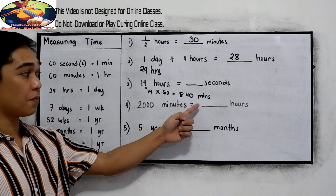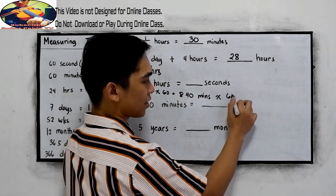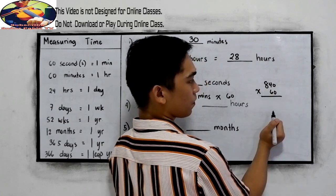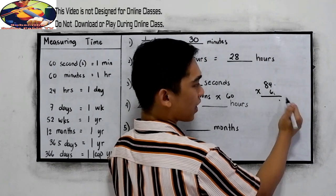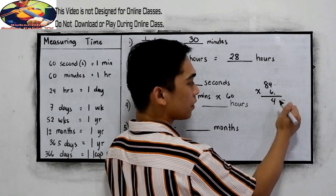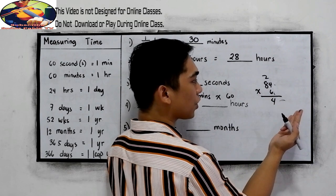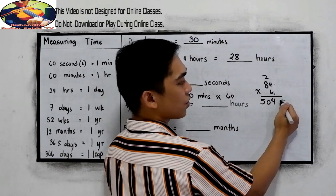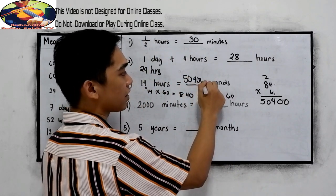So 840 minutes, we need to convert into seconds. So again, multiply it by 60. 840 times 60. So just remove the zero. We have two zeros. Just write two zeros later. 6 times 4, 24. Then we have two zeros. So write zero, zero. The final answer is 50,400 seconds.